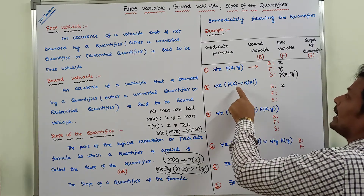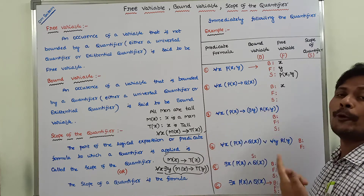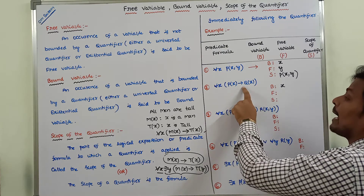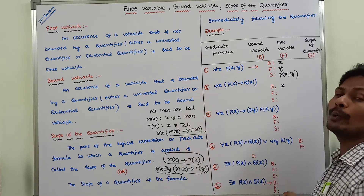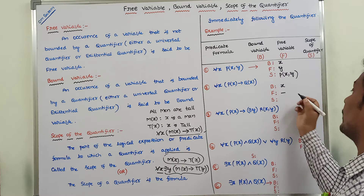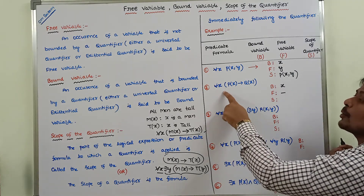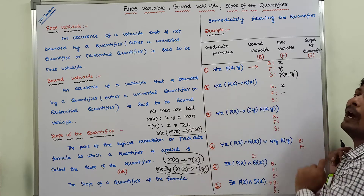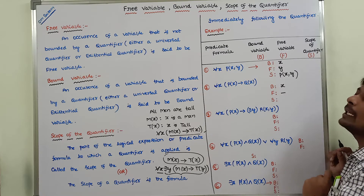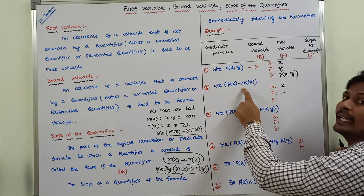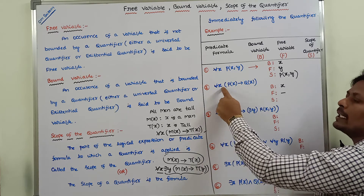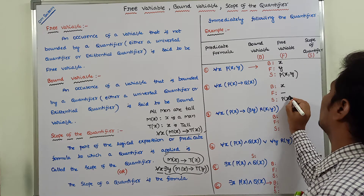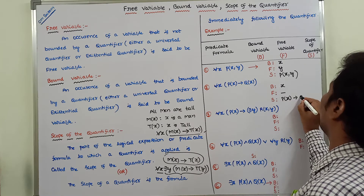There is no free variable because the only variable x is bounded with the universal quantifier. The scope of the quantifier is the predicate formula immediately following the universal quantifier, which is P(x) → Q(x).